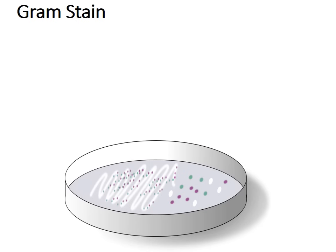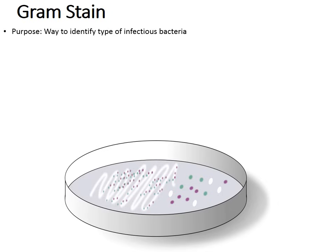Let's talk about this process known as a gram stain. The purpose of a gram stain is to help identify whatever infectious bacteria is getting us sick. Treatment will differ based upon the outcome of this gram stain.